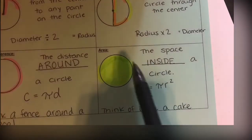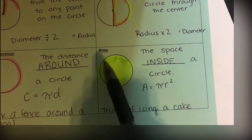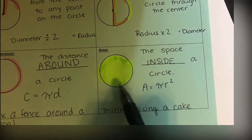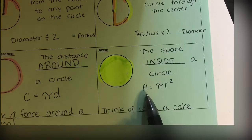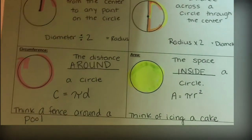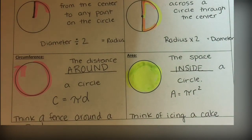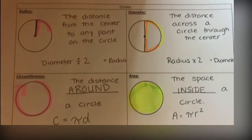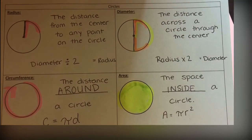Last one is area. I'm icing this cake—I want to know how much space is here. My formula is A = πr². Remember, these are on ClassKick completely filled out, so if you want to take a look at these notes at any time, please look at them there.